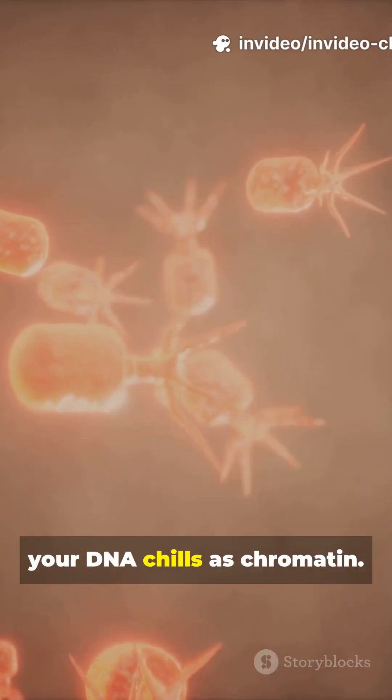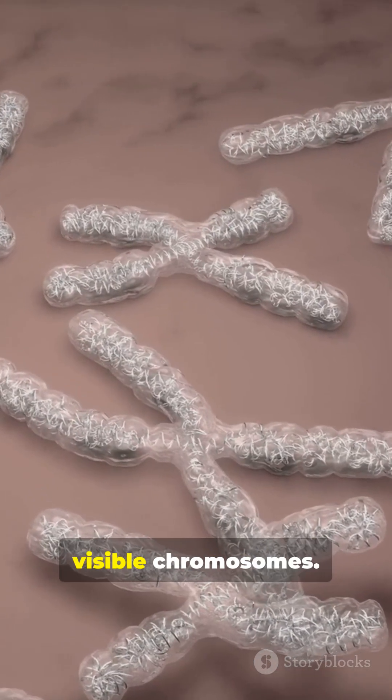Most of the time, your DNA chills as chromatin. Before cells split, it coils into visible chromosomes.